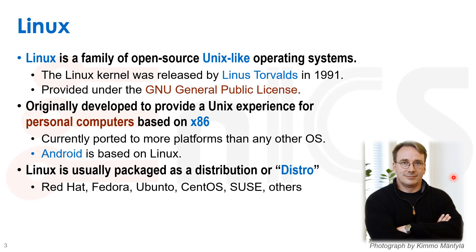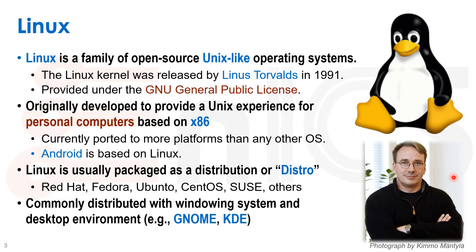Linux is usually packaged as a distribution, or what we call a distro. Distros include Red Hat, Fedora, Ubuntu, CentOS, Suzy, and many others. The distro basically combines the Linux kernel with all kinds of other programs that run on top, such as a windowing system and a desktop environment like GNOME and KDE.